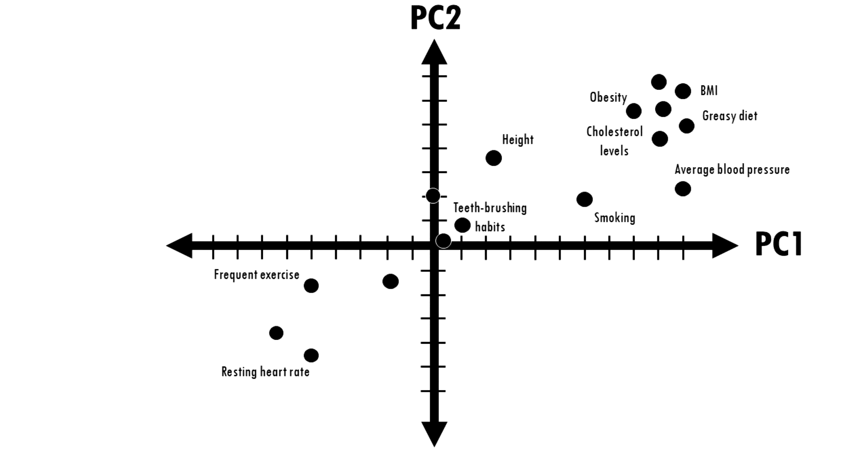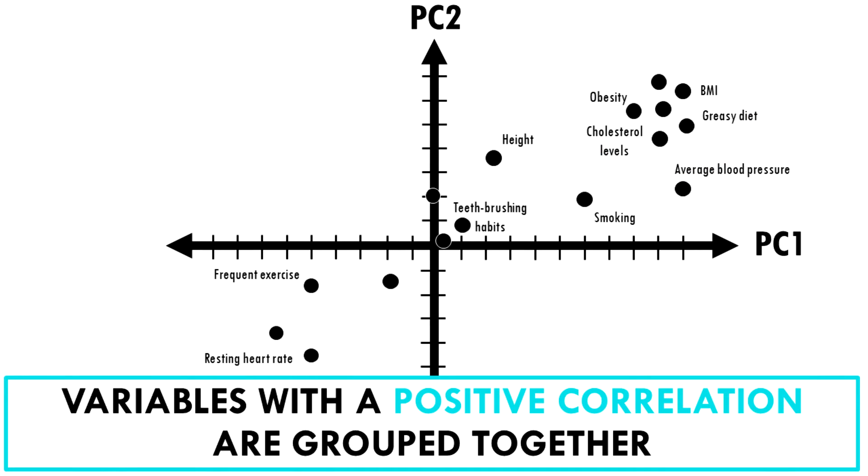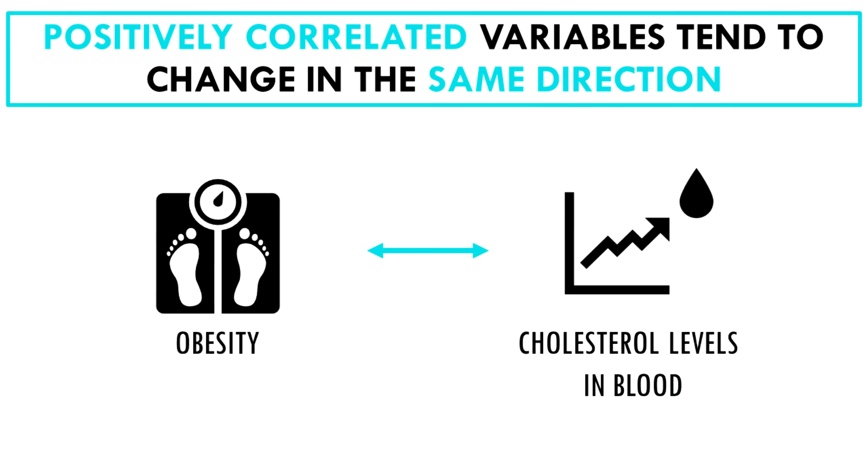So each of our 200 variables gets a loading score or weight for each principal component. You might have noticed that variables contributing similar information are grouped together. This is part of the magic of PCA. Variables that are positively correlated, for example, greasy diet and obesity, are grouped together. Correlated just means that when the numerical variable of one increases or decreases, the numerical value of the other variable has a tendency to change in the same way.